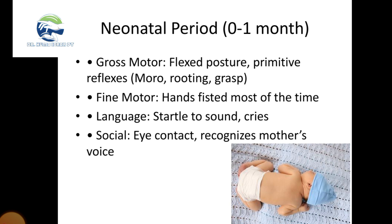Gross motor skills in zero to one month include flexed posture and primitive reflexes including Moro reflex, rooting reflex, and grasp reflex. Fine motor skills include hands fisted most of the time. Language milestones include startle to sound and cries. Social milestones include eye contact and recognizing mother's voice.